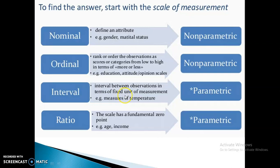Next is the ratio. The scale has a fundamental zero point. For example, age can be 0, income can be 0. So these are the variables which will start from 0. Such questions where we have scale of measurement of type ratio, we can also go for a parametric test.